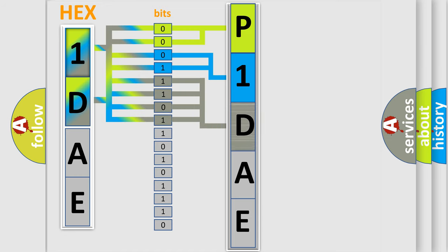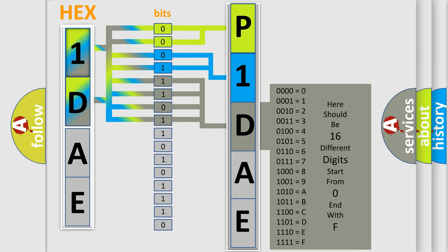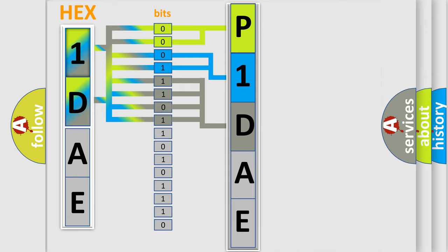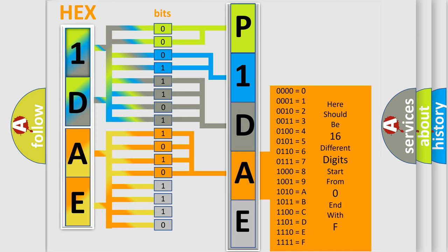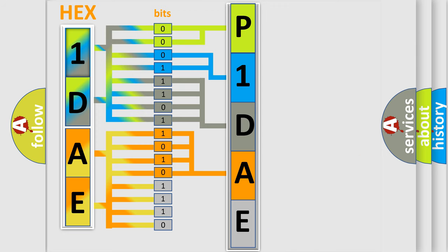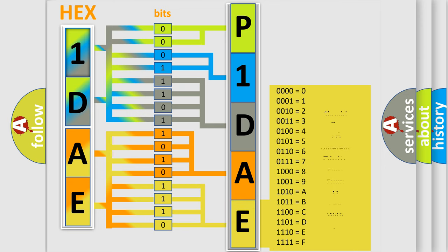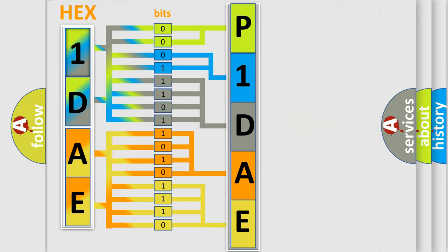The second byte is composed of a combination of eight bits. The first four bits determine the fourth character of the code, and the combination of the last four bits defines the fifth character. A single byte conceals 256 possible combinations.